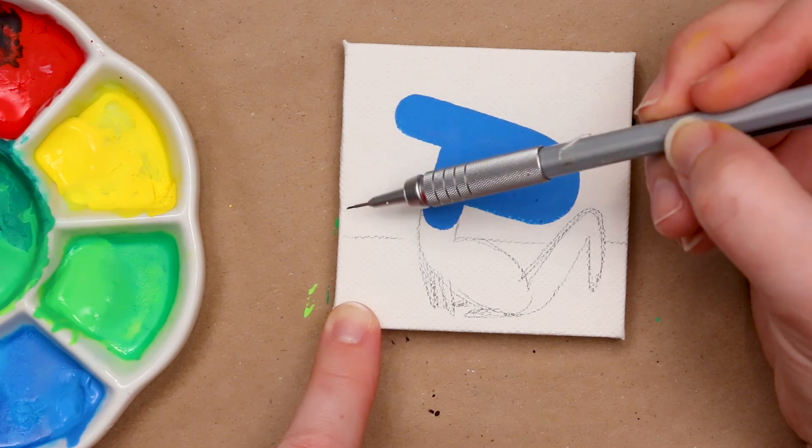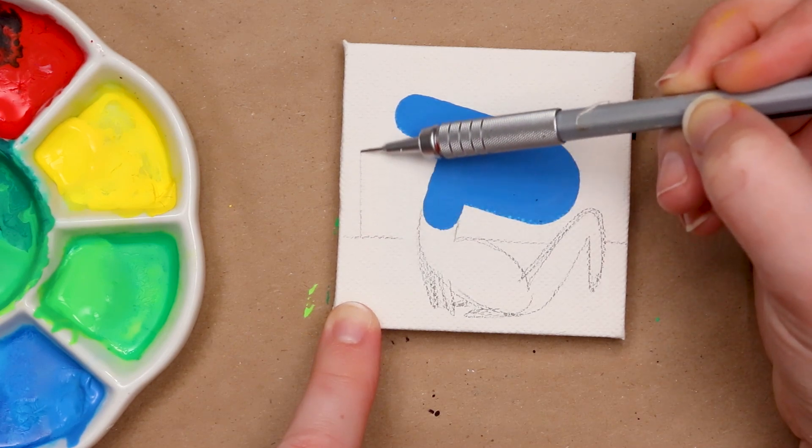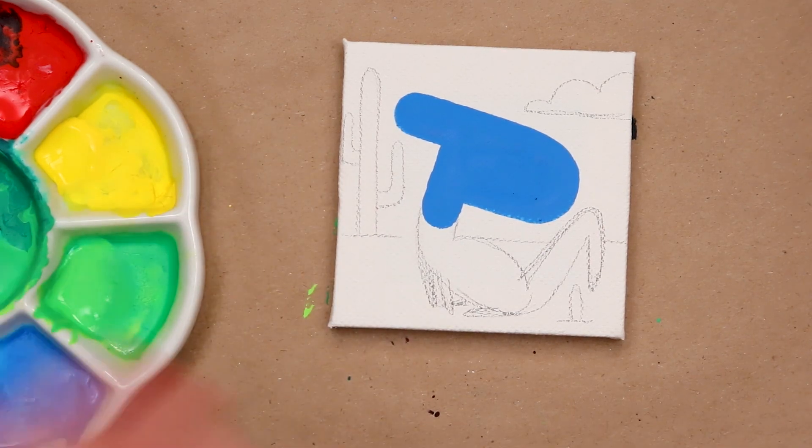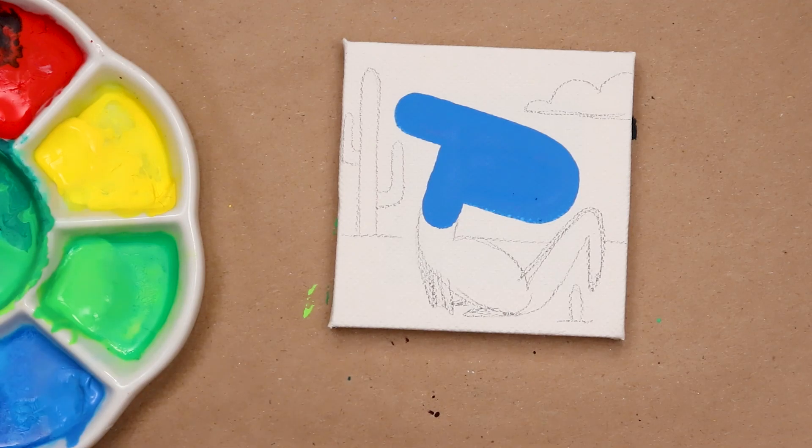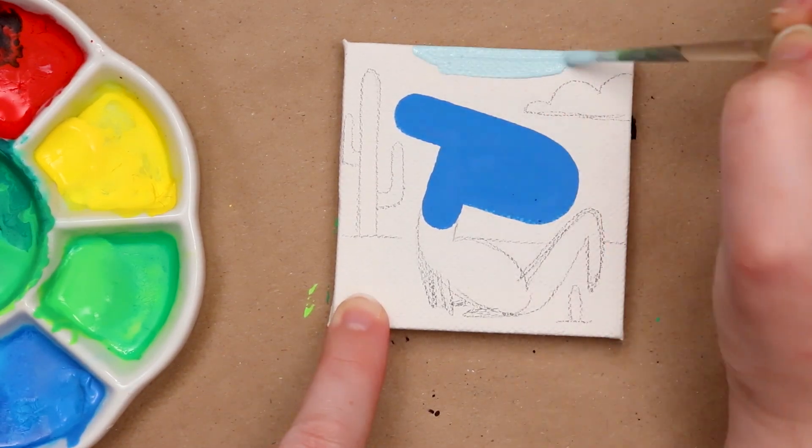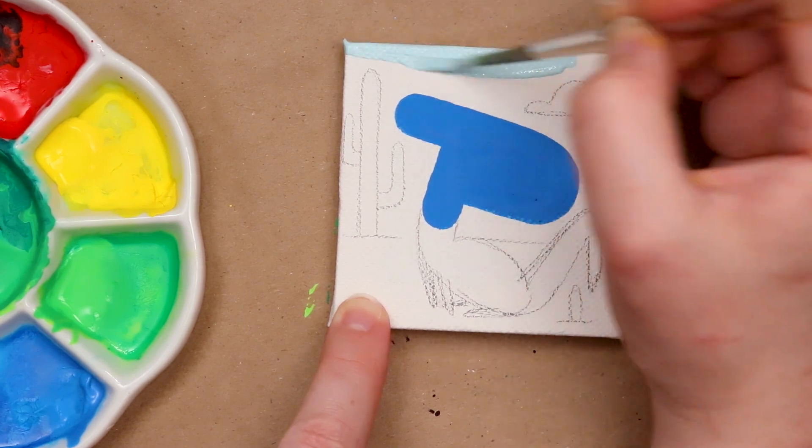And let's give it a desert-y background just to mix things up. Maybe we'll throw in a cactus because I love my cacti. Maybe one cloud because it's a desert-y situation. So I think because our character is a darker blue, I'm going to put a lighter blue background. So here we go. That'll create some nice contrast.